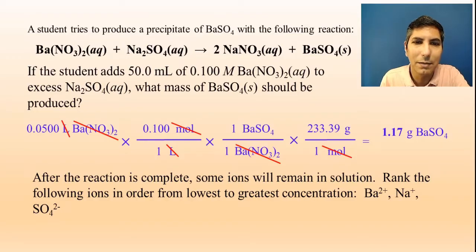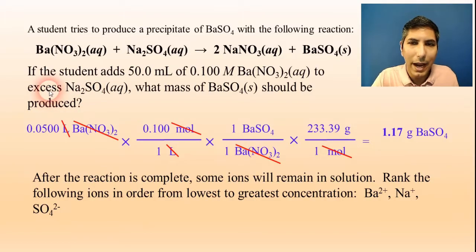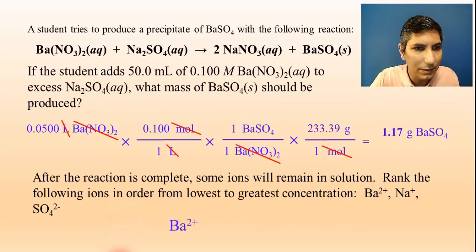After the reaction is complete, some ions will remain in solution. Rank the following ions in order from lowest to greatest concentration: barium ions, sodium ions, and sulfate ions. There are some clues that we can look at in the problem. It tells us right up here that the sodium sulfate is excess. So, what that means is at the end of this reaction, we're going to have quite a bit of sodium and sulfate left over, which means that the lowest concentration in solution would be the barium. So, that's going to be the lowest concentration.